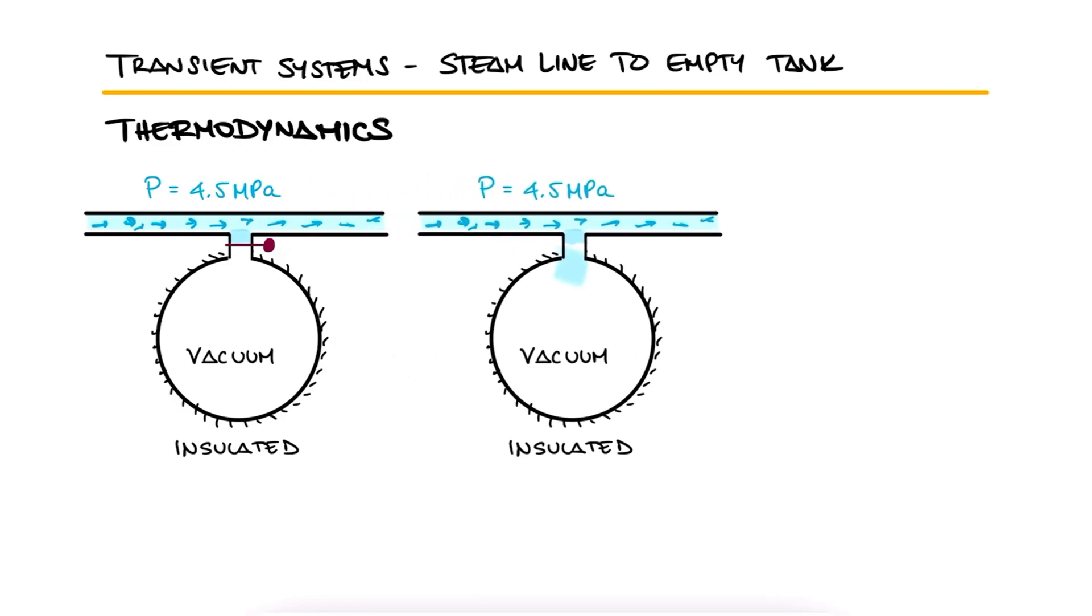Now the valve is opened and steam is allowed to flow into the tank until the pressure reaches 4.5 MPa, at which point the valve is closed.